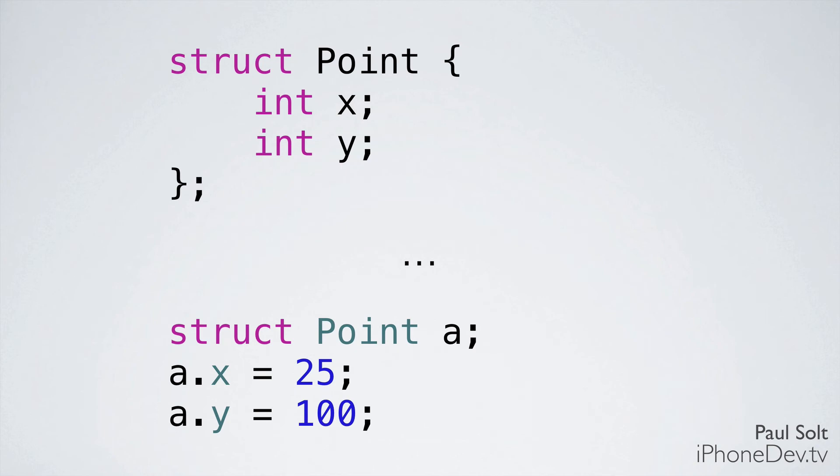Next, we have structures. These allow us to group information together so that we can pass it around and organize our programs. In this case, we want to store an x and a y coordinate for a point. So that would be something like 25, 100. The top portion will create that structure and we declare this above our int main function. And then inside of our int main function, we would create a structure and then initialize the values.